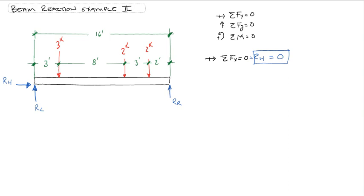I recommend using the sum of the moments next, because it allows us to take some of these unknowns out of the equation. So I'm going to say the sum of the moments about some point, counterclockwise, has to equal 0. Now the question is, what point?